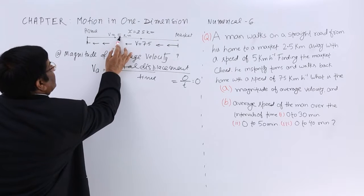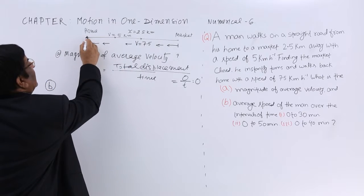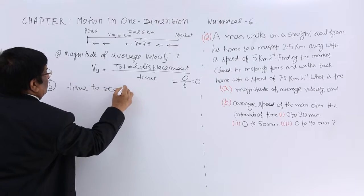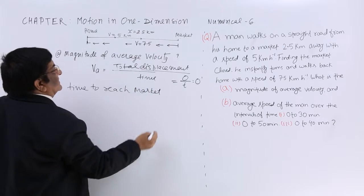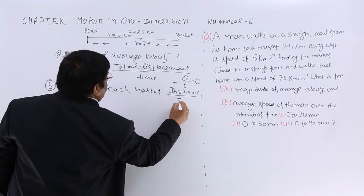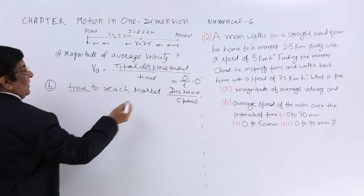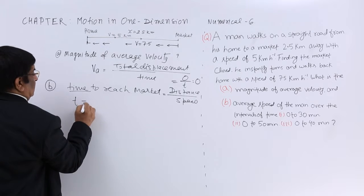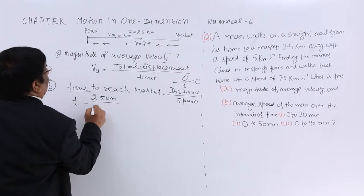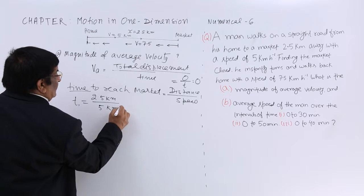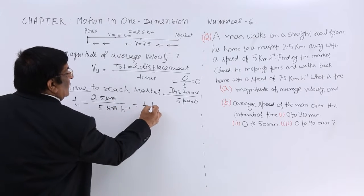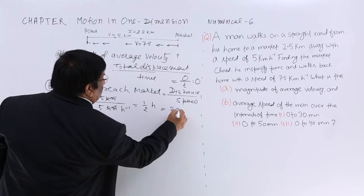His speed is 5 km/hr and the distance is 2.5 km. How much time will he take to reach from home to market? Time to reach market equals distance divided by speed. T1 = 2.5 divided by 5 km/hr = 1/2 hour = 30 minutes.